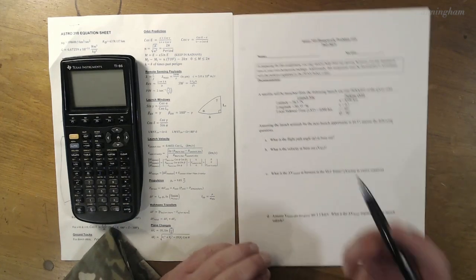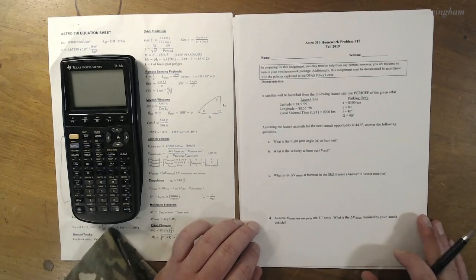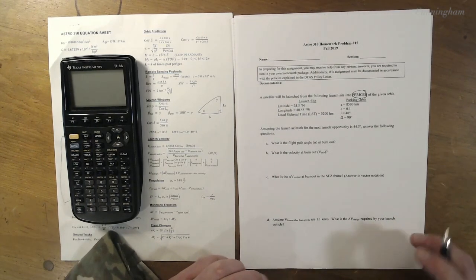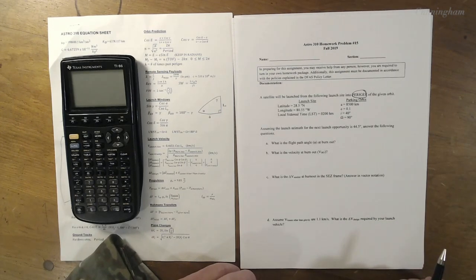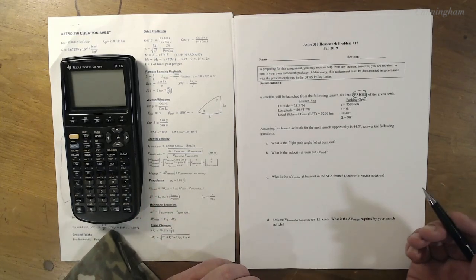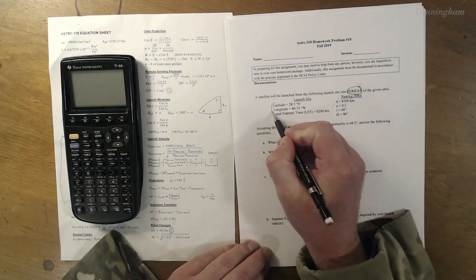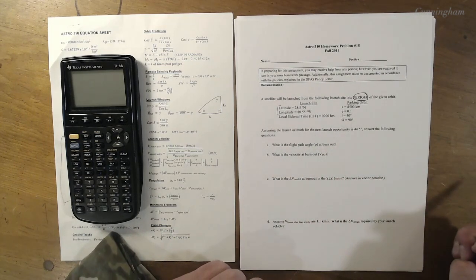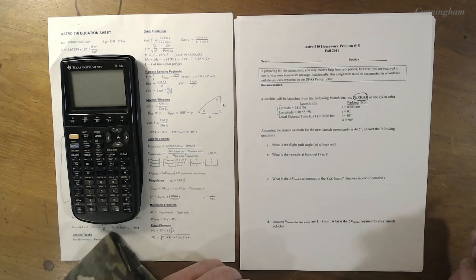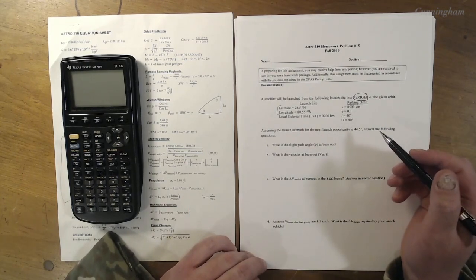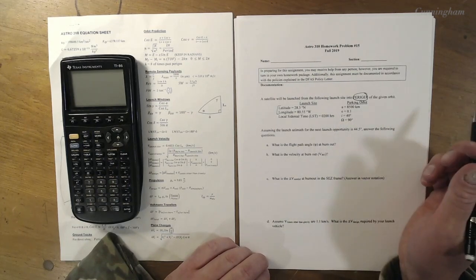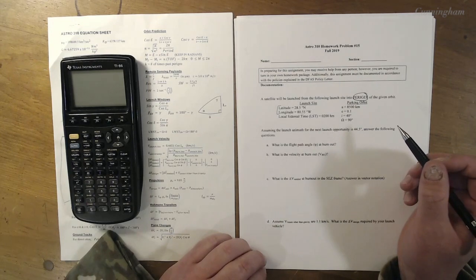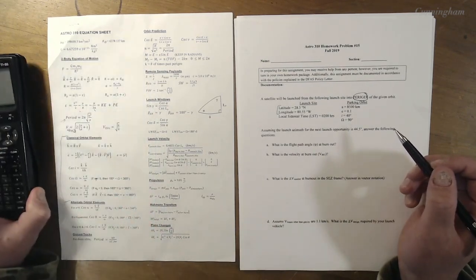A satellite will be launched from the following launch site at perigee of the given orbit. That's a big deal. The launch site is 28.5 degrees north, longitude 80 west, which is Cape Canaveral, Kennedy Space Center. Local sidereal time is 0.200. Our parking orbit has a semi-major axis of 8500, slightly eccentric at 0.1, and an inclination of 40 and a ran of 90.